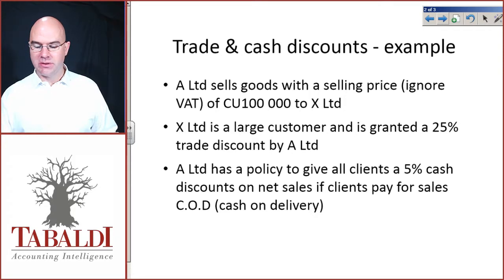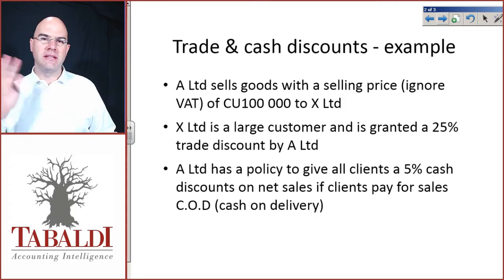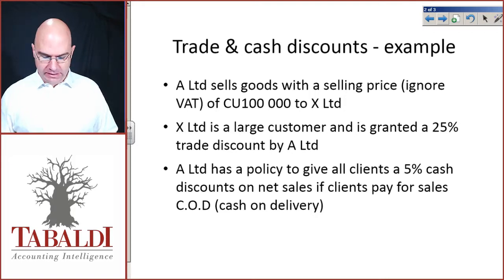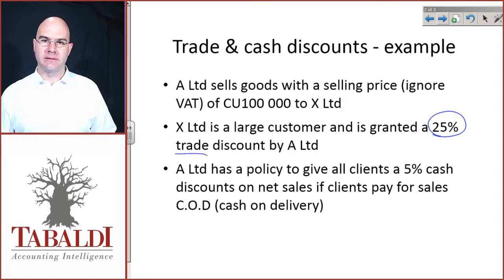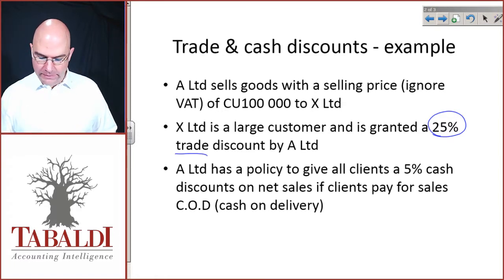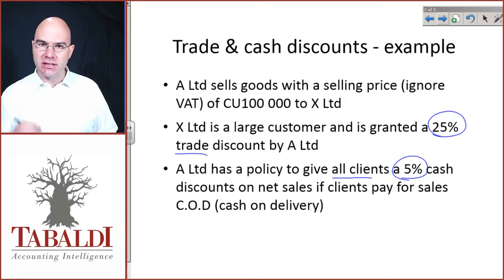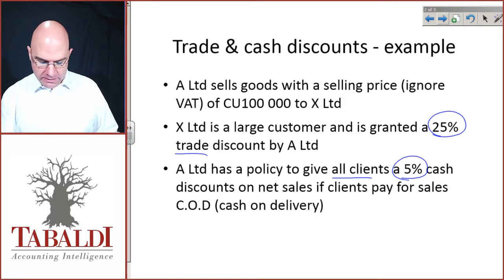A Limited sells goods with a selling price of $100,000 to X Limited — ignore any sales tax. X Limited is a large customer and is granted a 25% trade discount by A Limited. A Limited also has a further discount policy to give all clients a 5% cash discount on net sales if clients pay COD, cash on delivery.